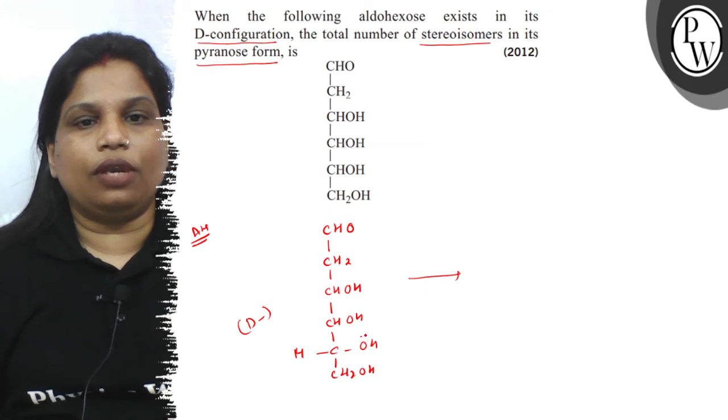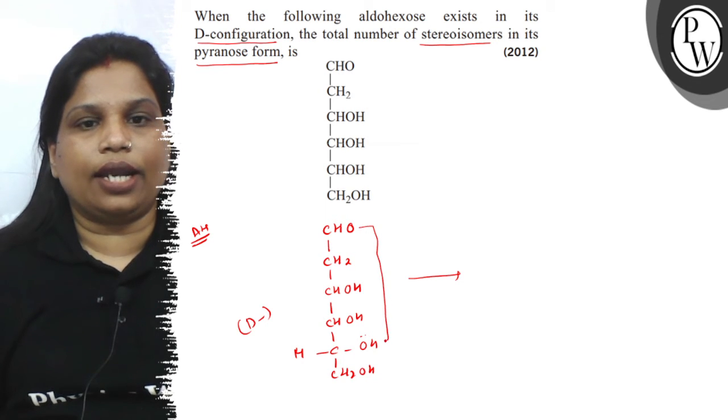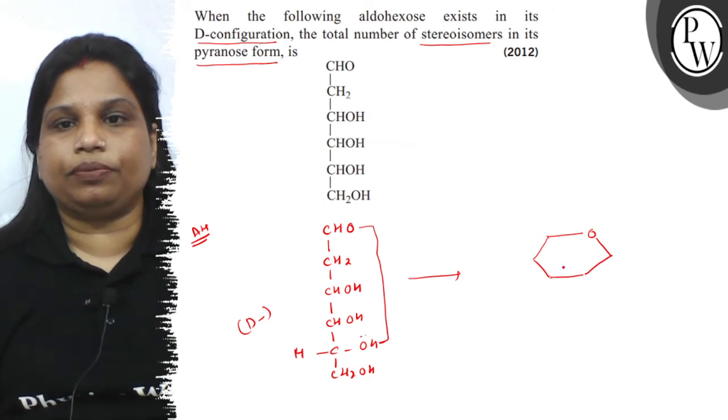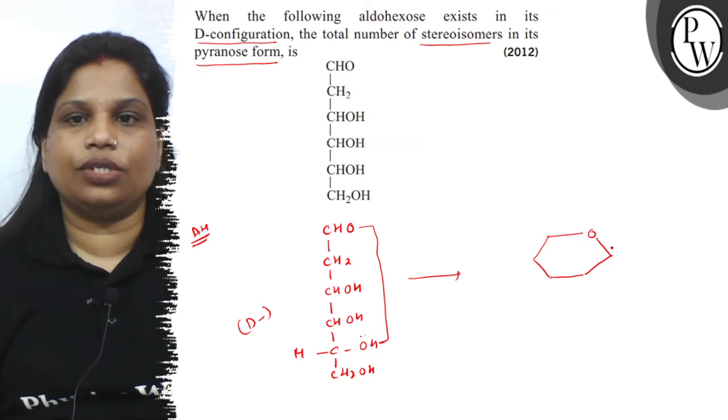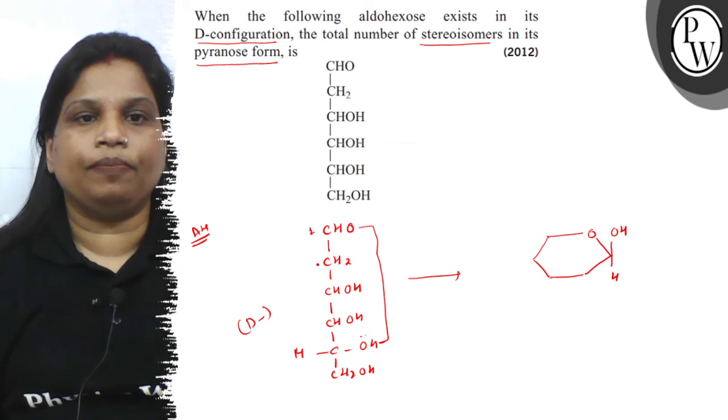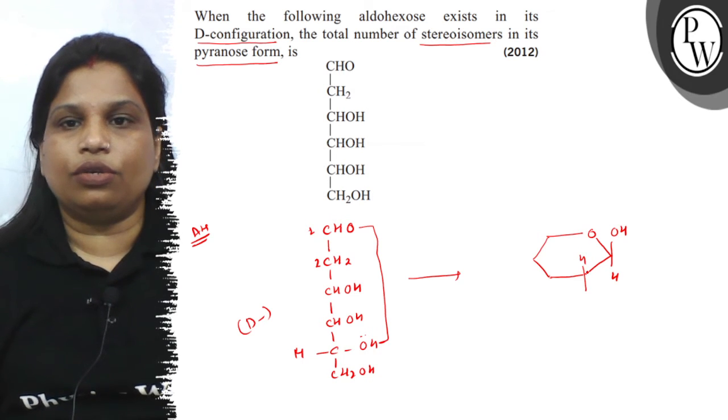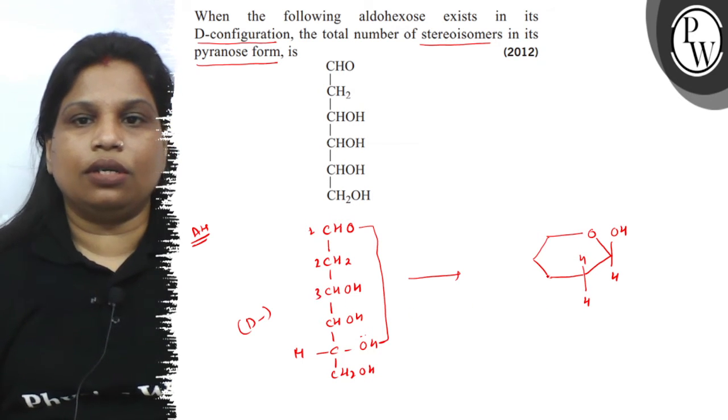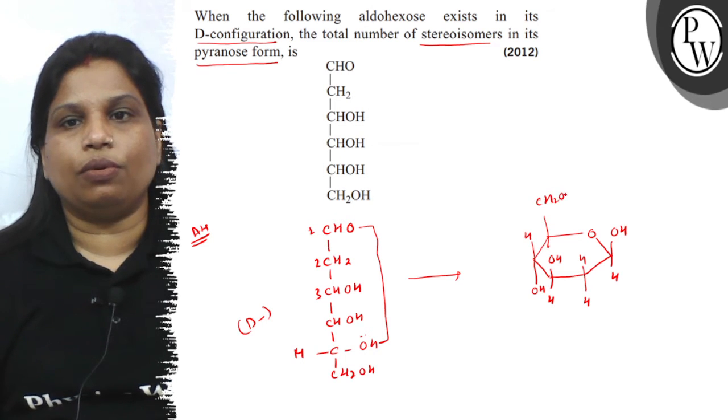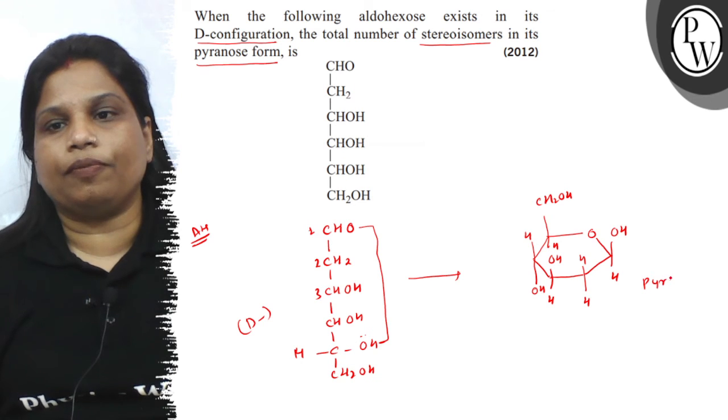Now, in the ring structure, it will form the ring in the pyranose form. Therefore, in the pyranose structure, you can write it down in this way. Where this is the first carbon, this is OH and H. This is the second which is having two hydrogens, this is third which is having one hydroxyl, one OH and this is H and OH. And here it is CH2OH and H. So, this is the pyranose form.